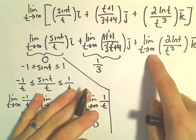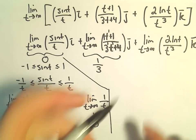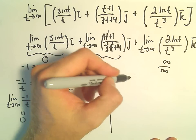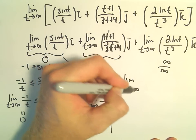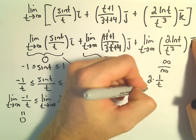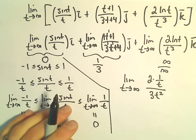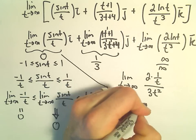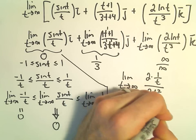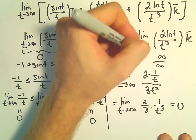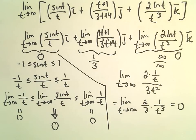We're left with the limit as t goes to infinity of 2 times the natural logarithm of t over t cubed. This is infinity over infinity, so we use L'Hôpital's rule: the derivative gives us 2 times 1 over t, divided by 3t squared. We can write that as the limit as t goes to infinity of 2/3 times 1 over t cubed. As t goes to infinity the denominator gets very large, so this whole limit equals 0.